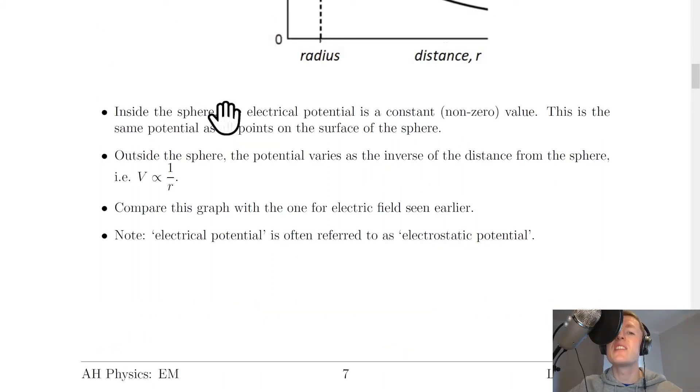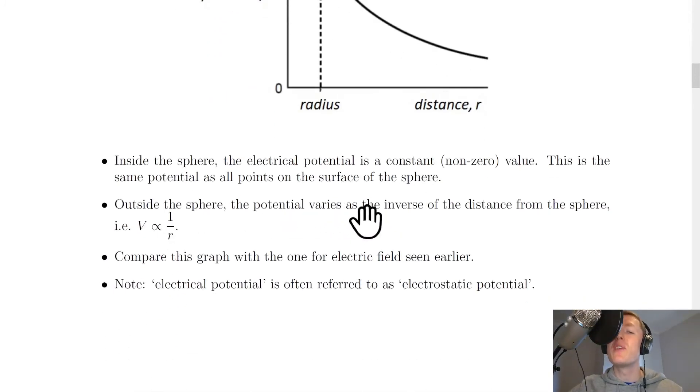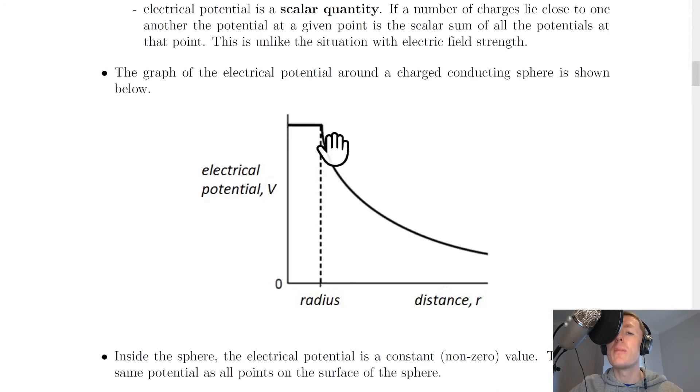So it says here that inside the sphere, the electrical potential is a constant non-zero value. This is the same potential as all points on the surface of the sphere. So that is shown by this straight line here. It then says outside the sphere, the potential varies as the inverse of the distance from the sphere, i.e. V is proportional to 1 over R. So this is shown by this curve here, V is proportional to 1 over R.